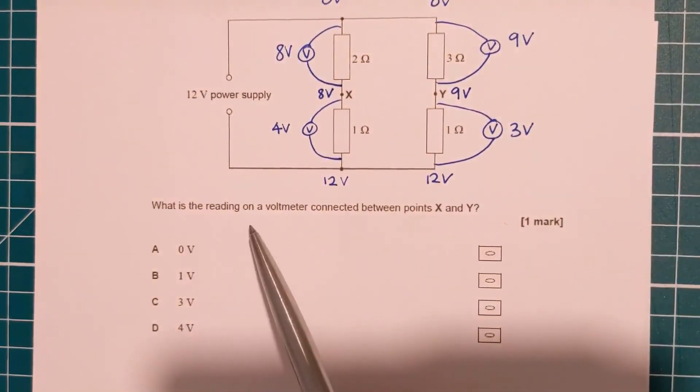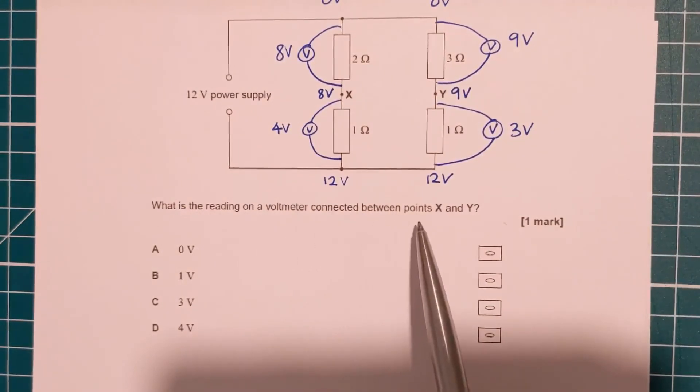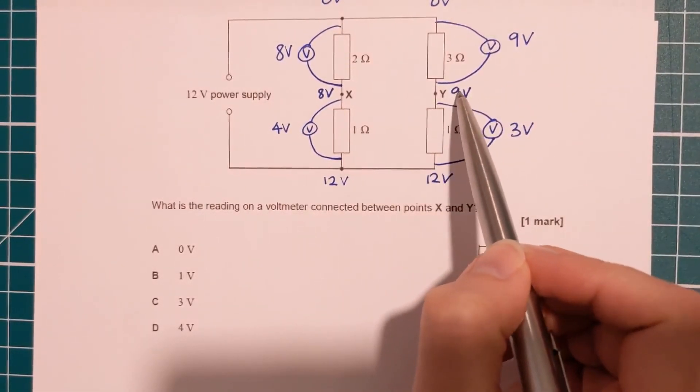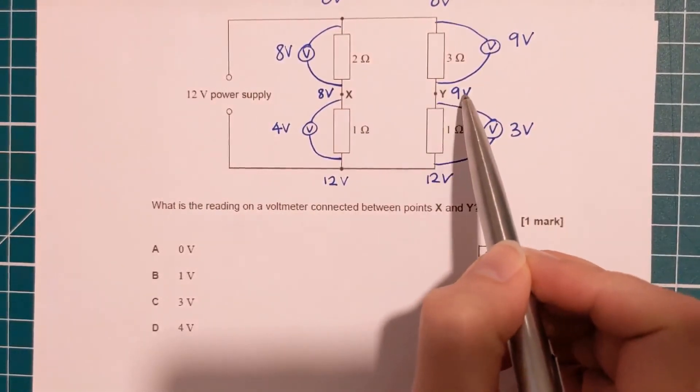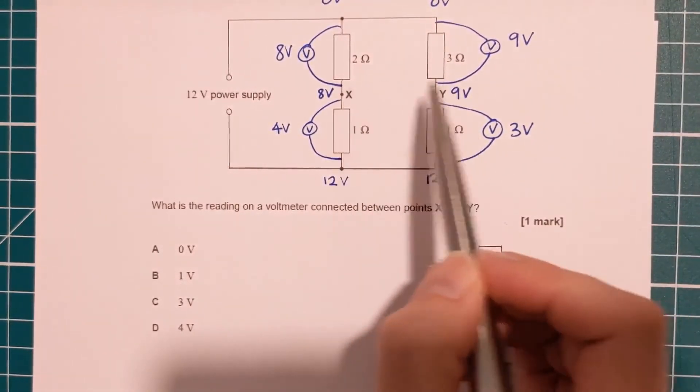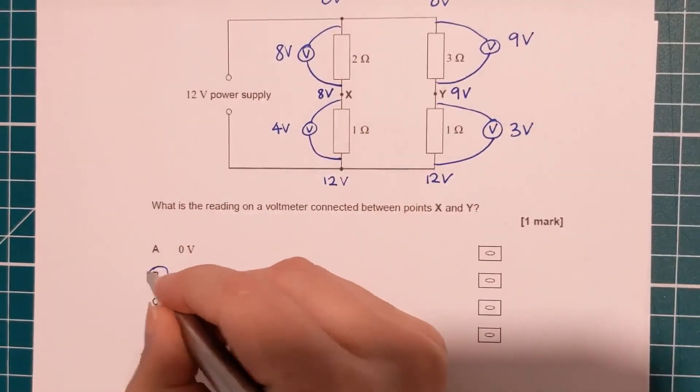So the question is, what's the reading on the voltmeter going to be if we connect it between X and Y? Well, at X, we've got nine volts, and at, sorry, Y, we've got nine volts, and at X, we've got eight volts. So the difference between those two is one volt.